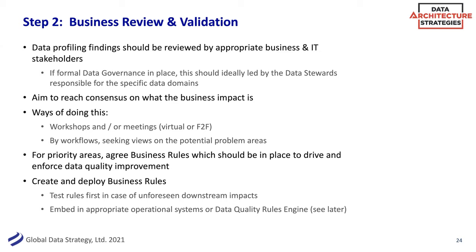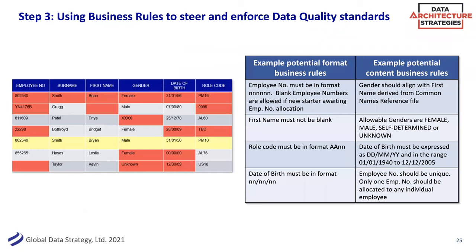Once you've used that group of stakeholders to agree on what the business rules should be, you can design the business rule and then deploy it somewhere in the organization. Looking at the small table of data, you can already begin to see potential format and content business rules emerging. For example: a first name must not be blank — so Greg's record doesn't meet the standard; the allowable genders are female, male, self-determined, or unknown — so Patel's gender of four X's is not conformant; and so on. You can see how that all begins to work, leading to the next question: now that you've decided what the business rules should be and agreed on them, how do you deploy them?